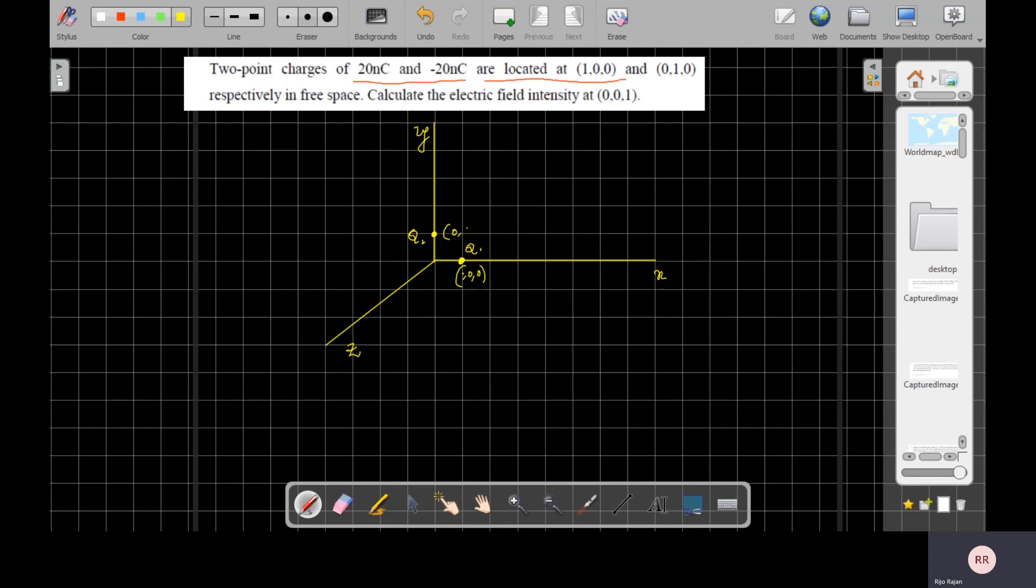And the question is, calculate the electric field intensity at (0,0,1). So where is (0,0,1)? Let us consider this point is the point P. Its coordinate is (0,0,1) and you have to find the electric field intensity at this point.